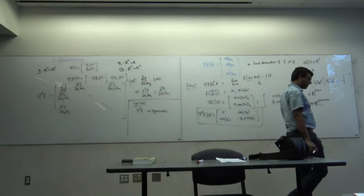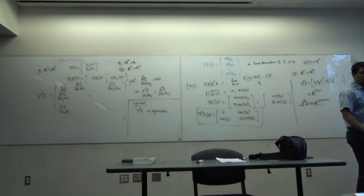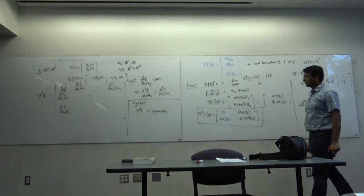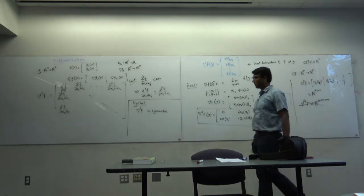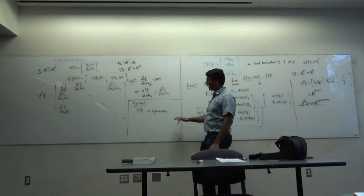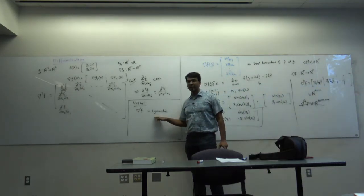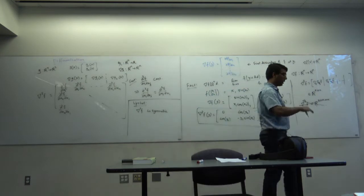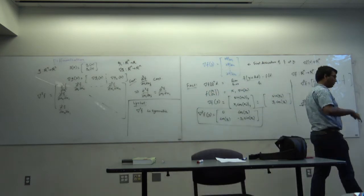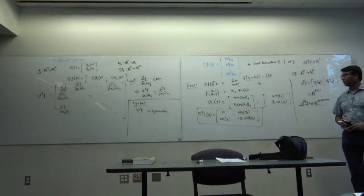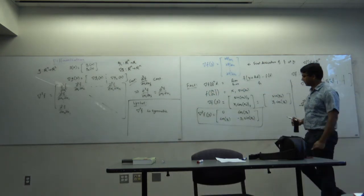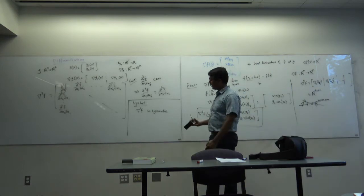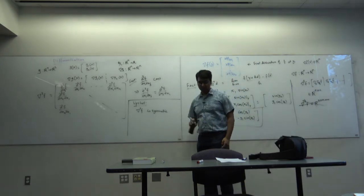The upshot is: the Hessian is symmetric. I'm not saying it is positive definite or positive semi-definite or negative definite — it could have positive, negative, or zero eigenvalues. All I am saying is it's symmetric.